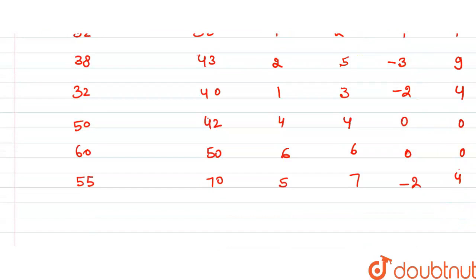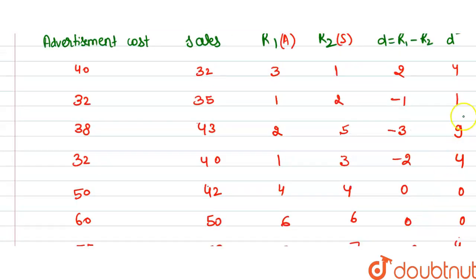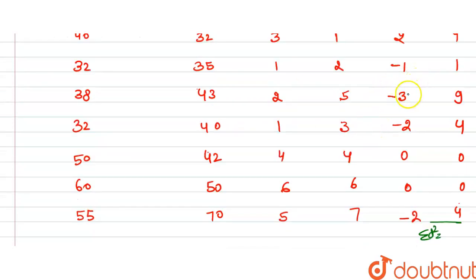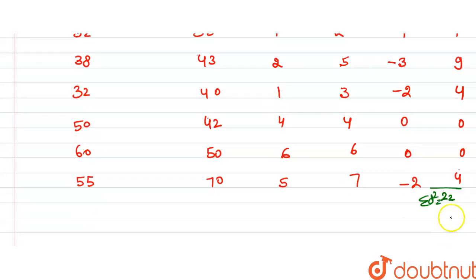So the summation of d square equals 4 plus 1 plus 5 plus 9 plus 4, then 14 plus 4 is 18, and 18 plus 4 is 22. So summation d square equals 22.